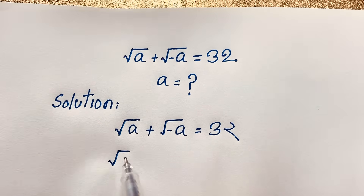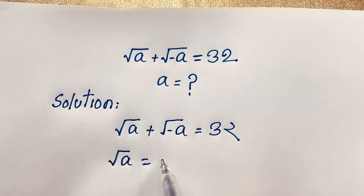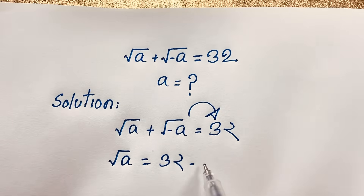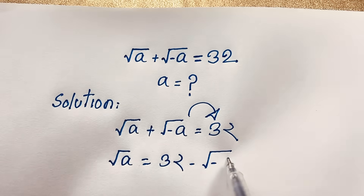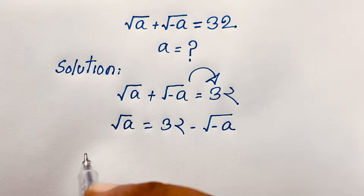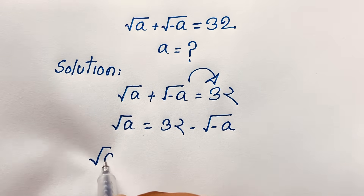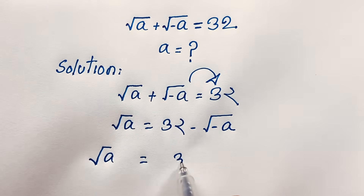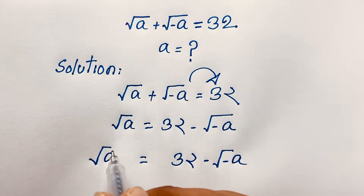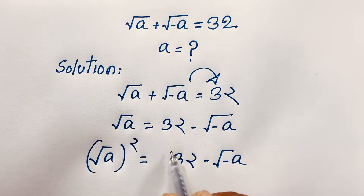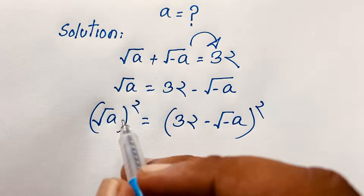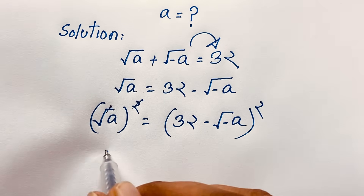So, starting from square root of a plus square root of negative a equals 32, I move square root of negative a to the other side, giving square root of a equals 32 minus square root of negative a. Now I square both sides — the square on the left cancels the square root, giving us a on the left.